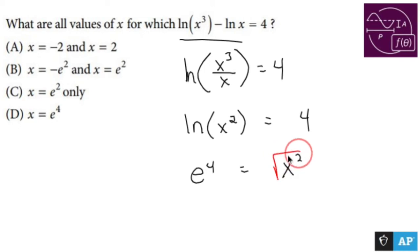Square root both sides, and when I square root both sides to solve for x, x is going to equal positive or negative the square root of e⁴, which is ±e².